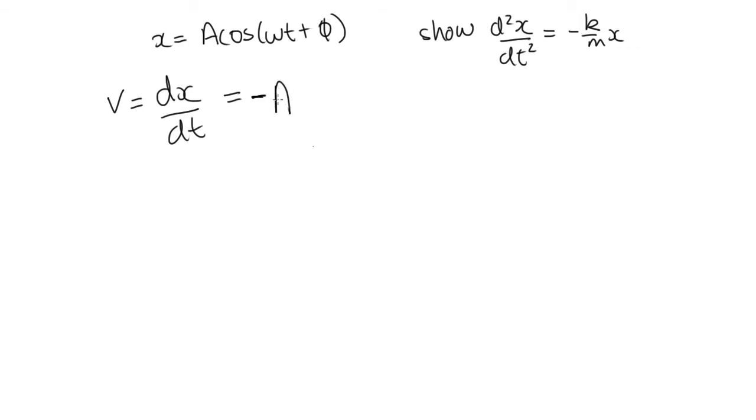So we've got minus A, this constant. The derivative of the inside of this cos function is omega and then sine omega t plus phi.